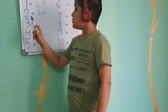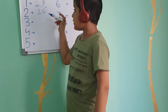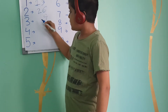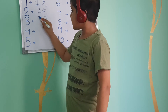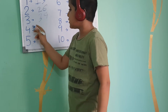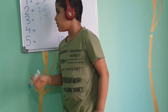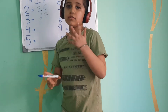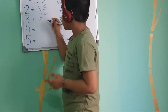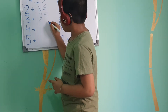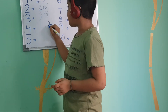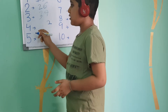Now we will do 3 threes, which is 9, and we will take 3 from here, so it becomes 39. Now we will do 3 fours, which is 12. So we will write 2 here and take 1 carry.